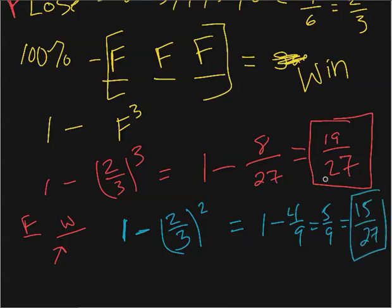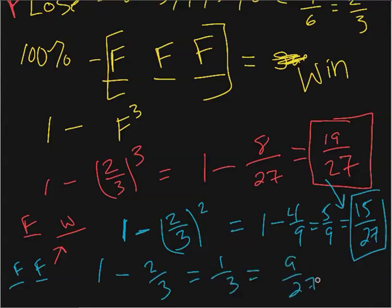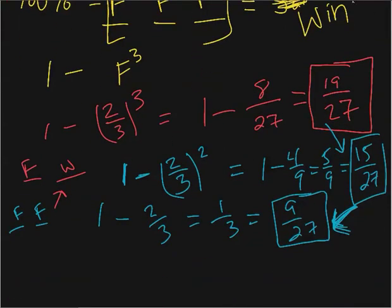The chances of me winning actually went down by me losing on the first toss. And likewise, if I fail again, the chances of me winning are, so I failed twice in a row now, two Fs. The chances of me winning are the opposite of me failing on the last one, which is one minus two-thirds, which is one-third, which is nine out of 27. So they have drastically decreased by me actually failing. My chances of winning have gone down by me losing the first two times. That is the opposite of Gambler's Fallacy.